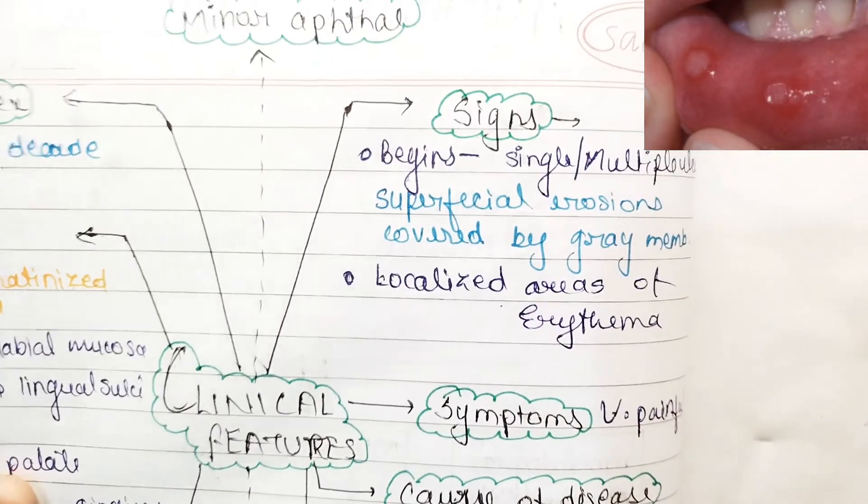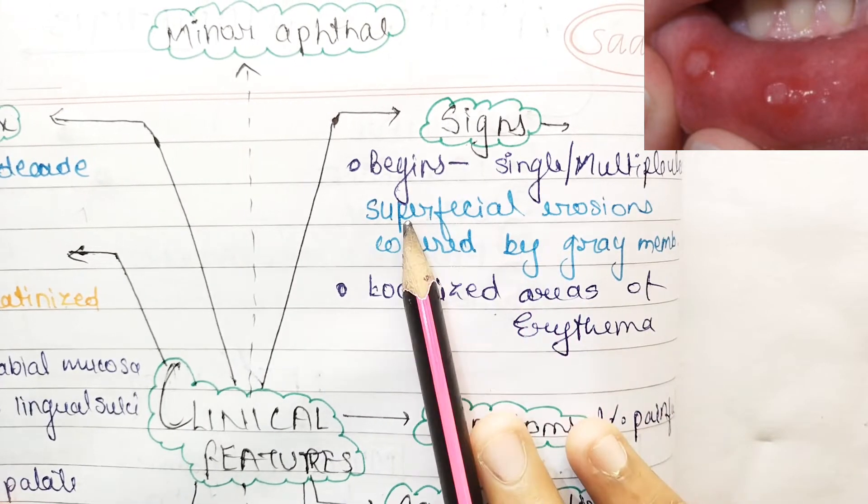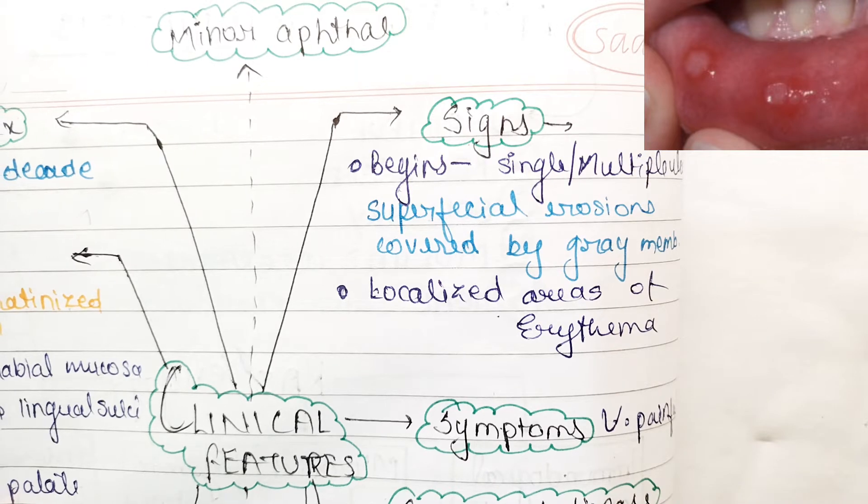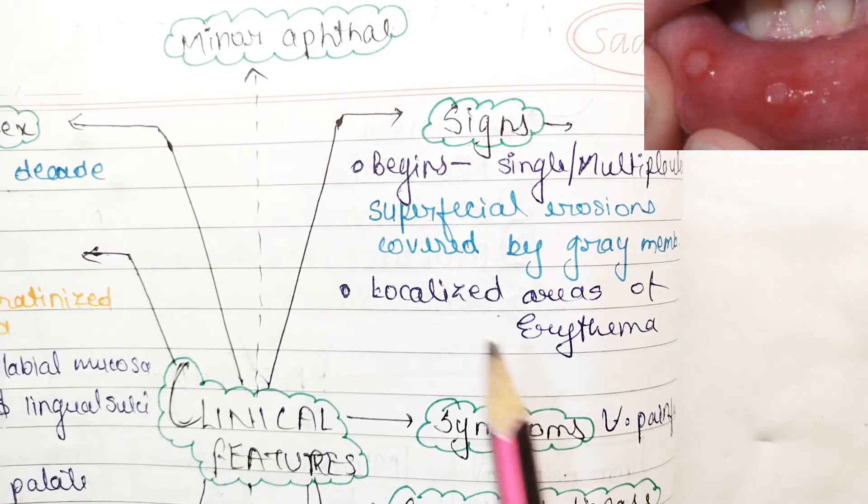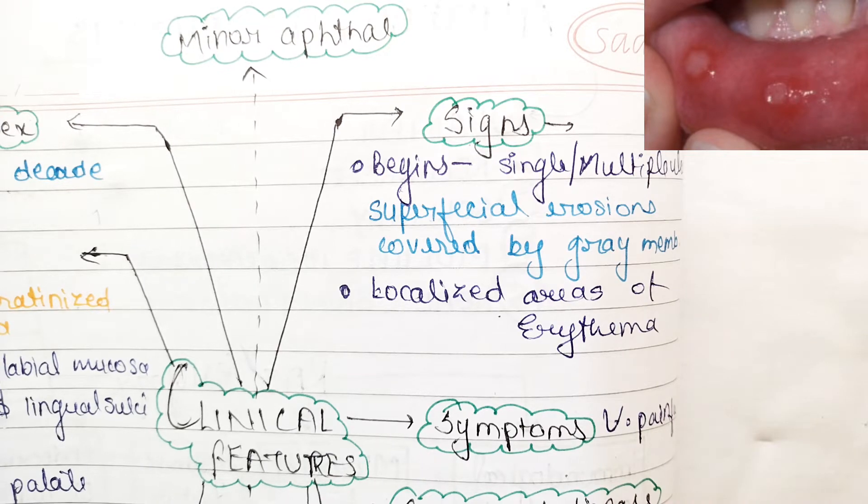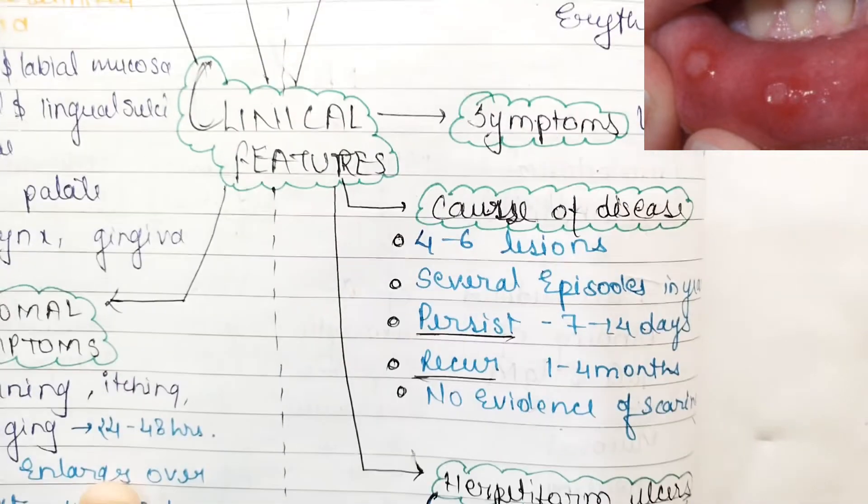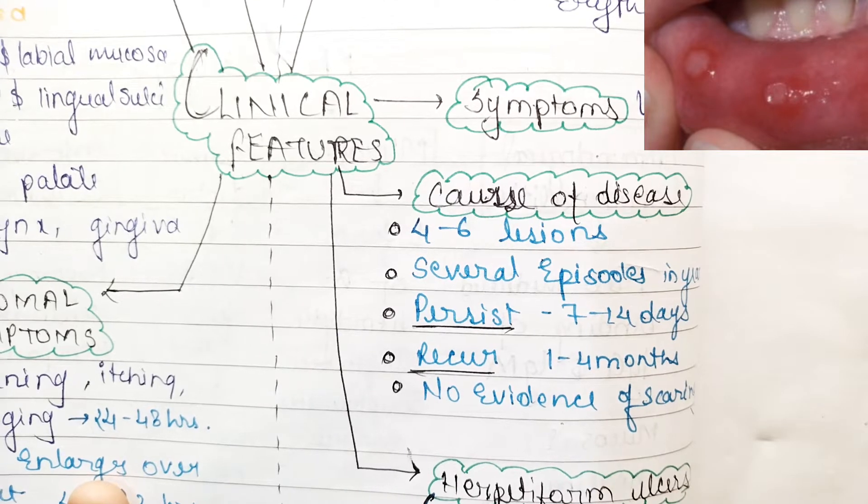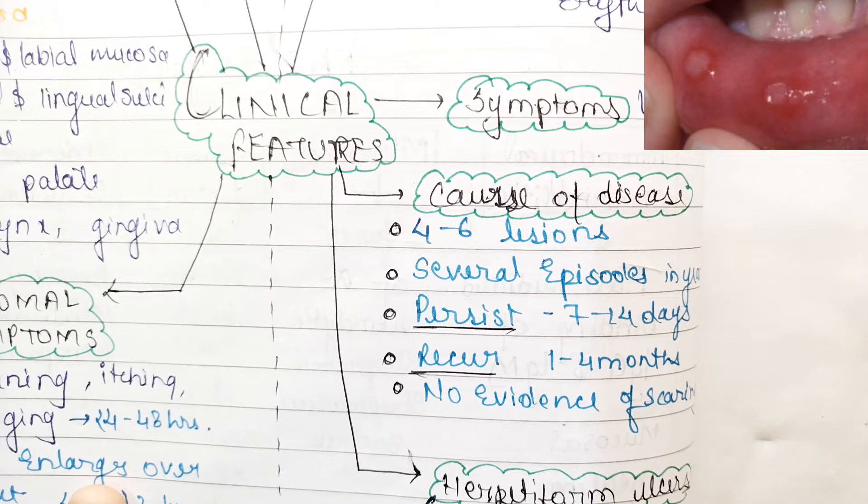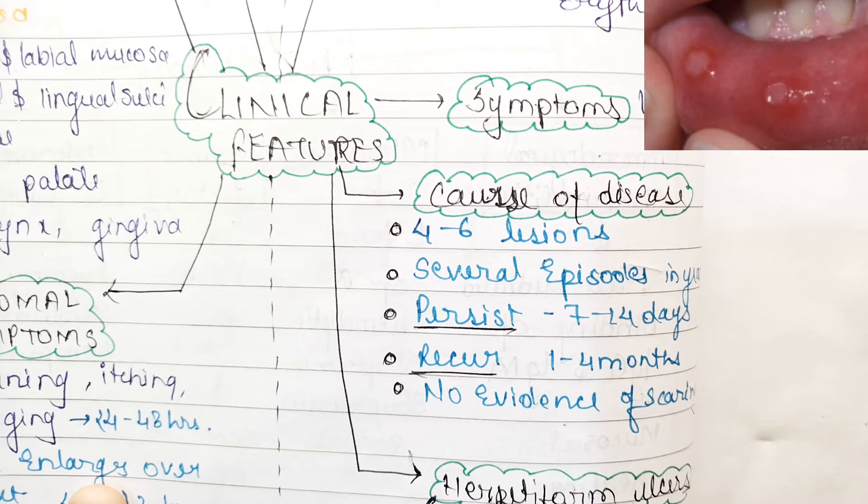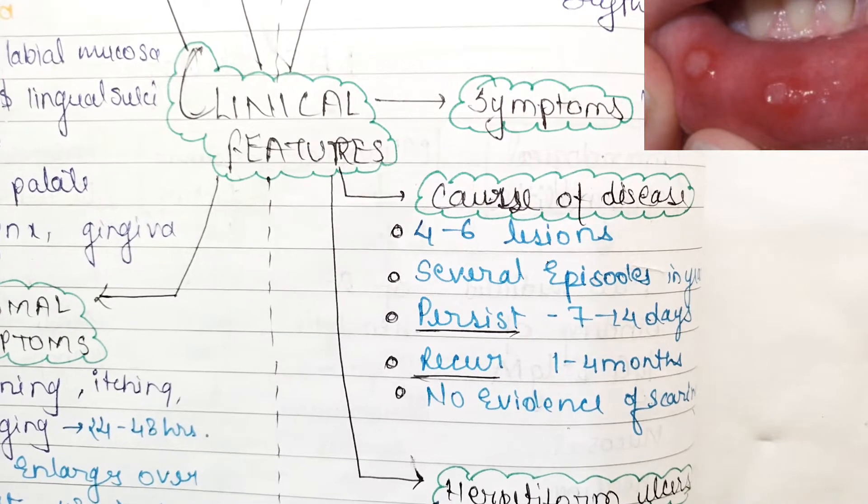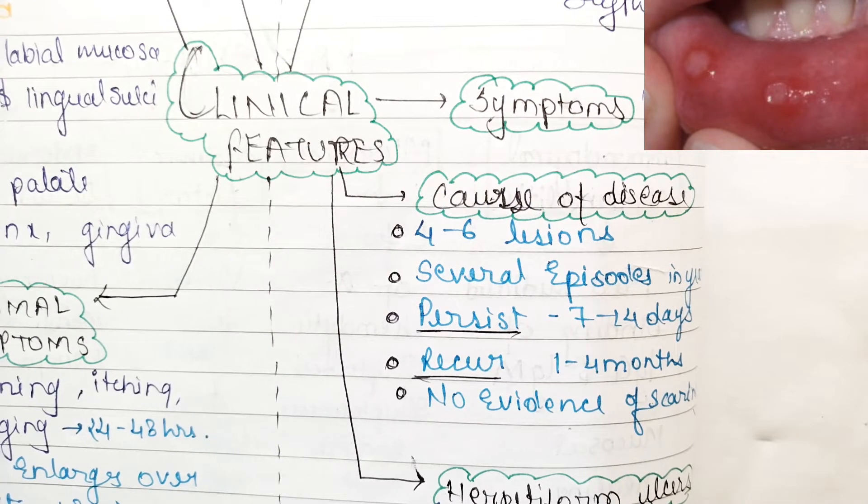Now coming to symptoms, they are very painful. If we look at signs, they begin with single and multiple ulcers. Superficial erosions covered by grey membrane are localized in an area of erythema. Looking at the course of disease, there are 4 to 6 lesions with several episodes persisting for 7 to 14 days. They can recur within 1 to 4 months with no evidence of scarring, until it's herpetiform or major aphthae.